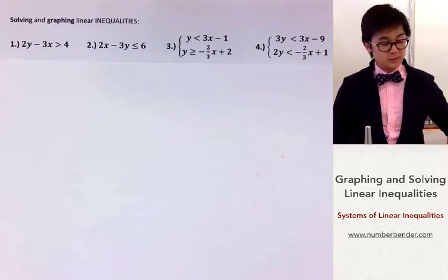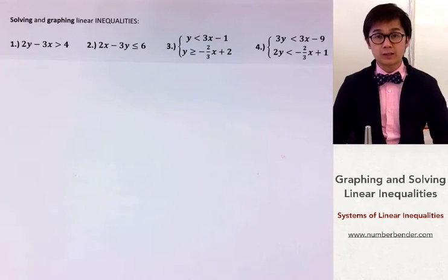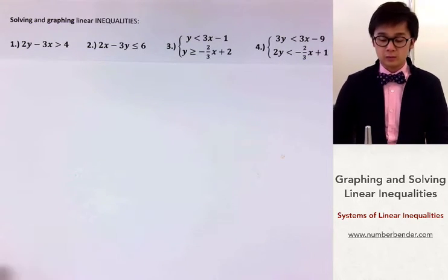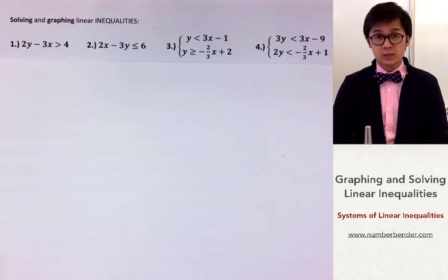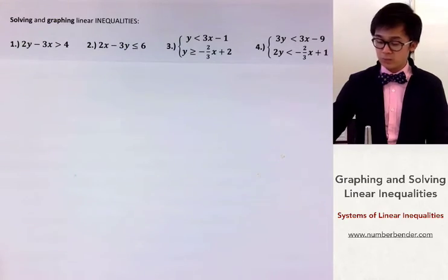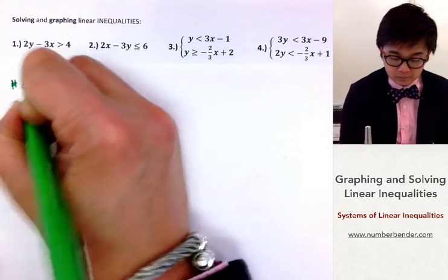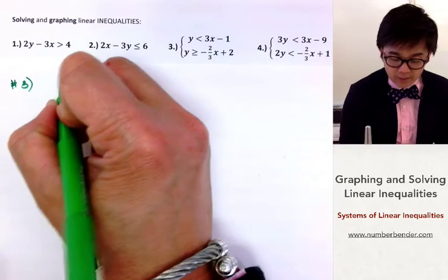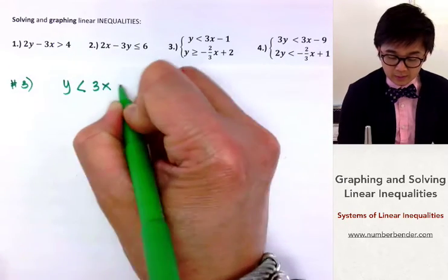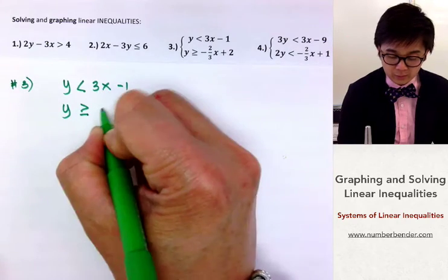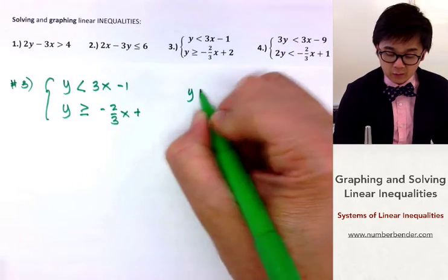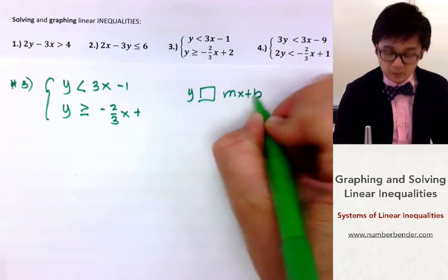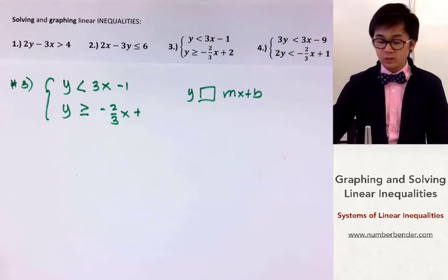For problems 3 and 4 it's a special case because now we have two inequalities — we're graphing them as a system. We look at the intersection or overlap of the first and second linear inequalities. For problem number 3, we have y less than 3x minus 1 and y greater than or equal to negative 2 over 3x plus 2. Since both are already in slope-intercept form, we can graph them directly.